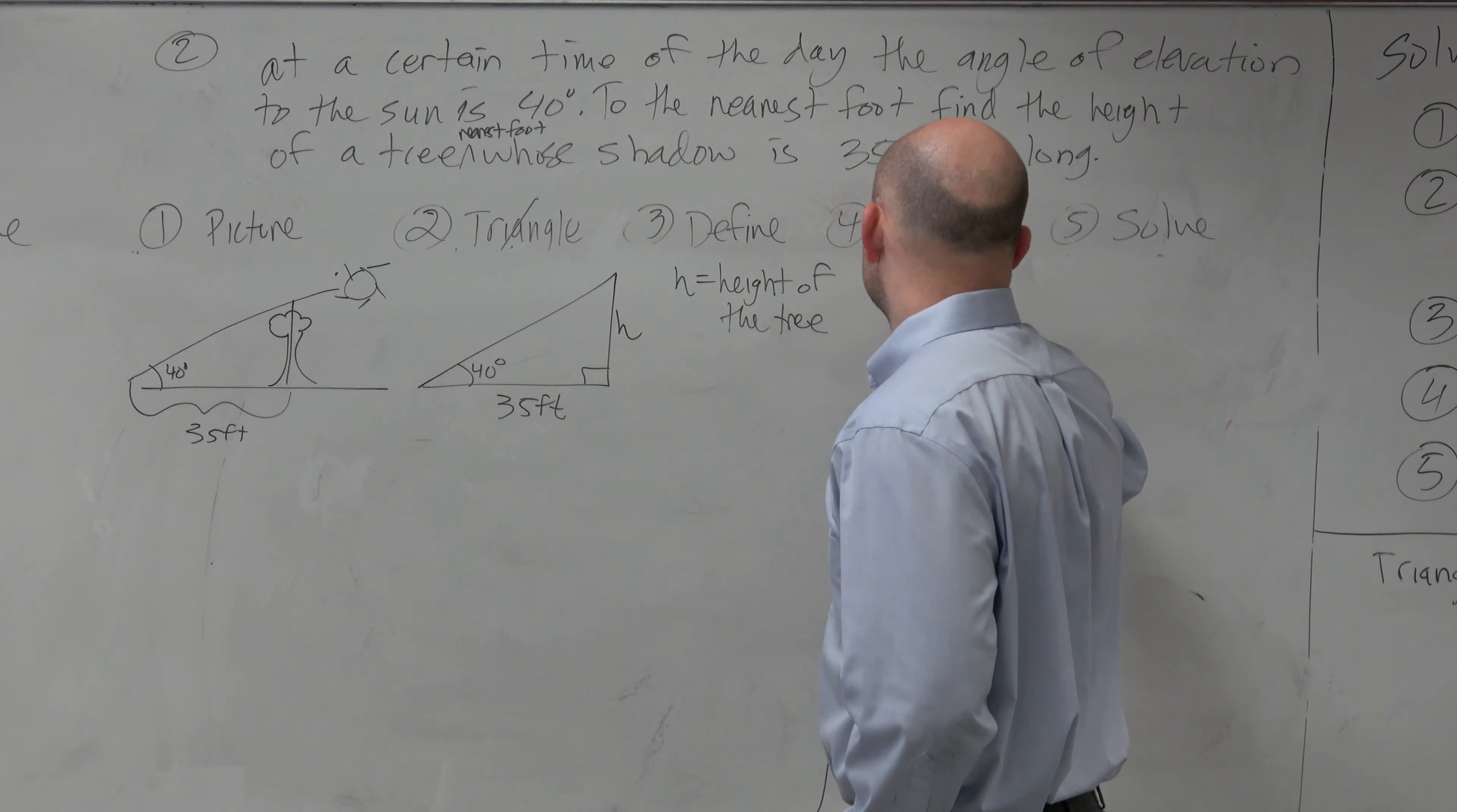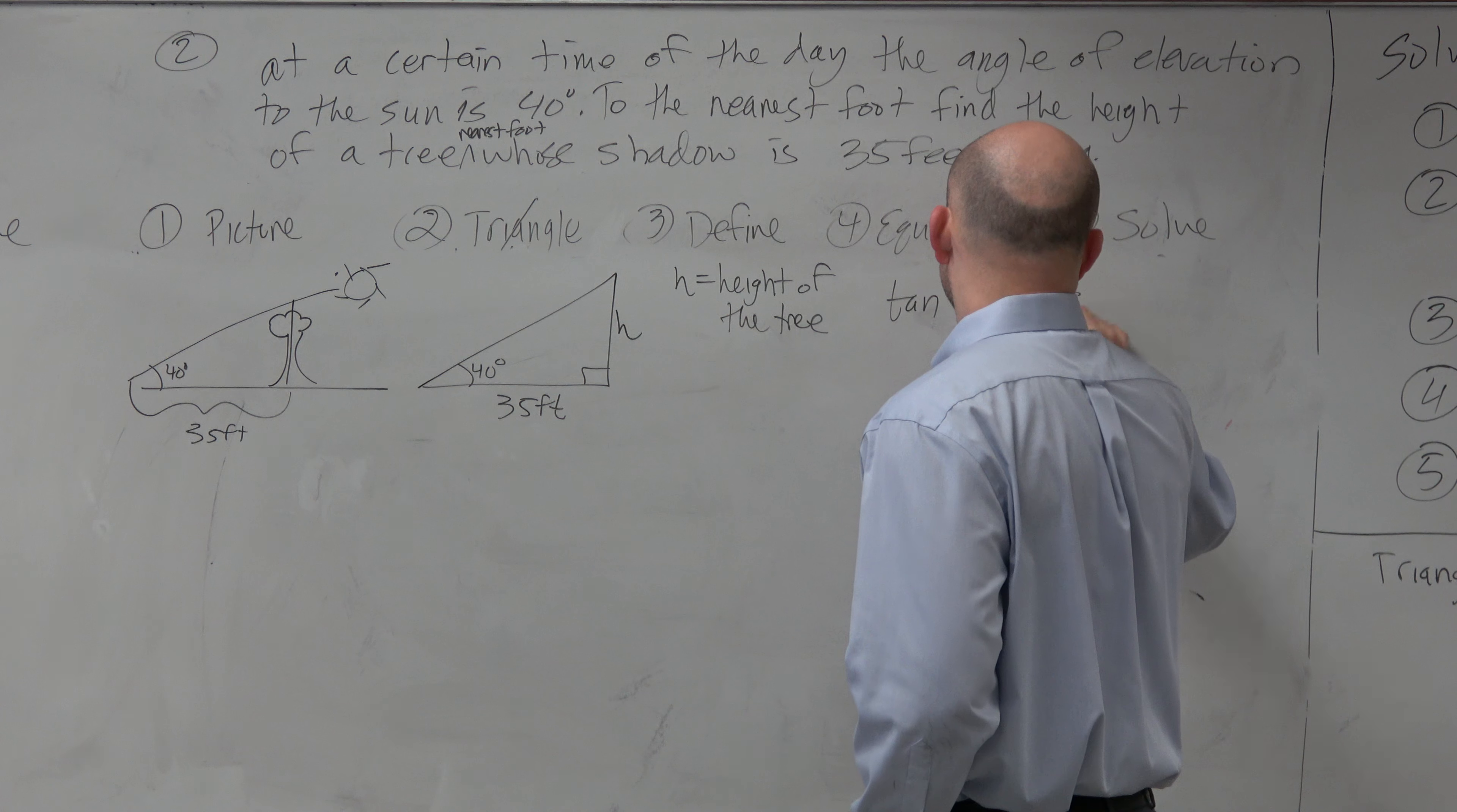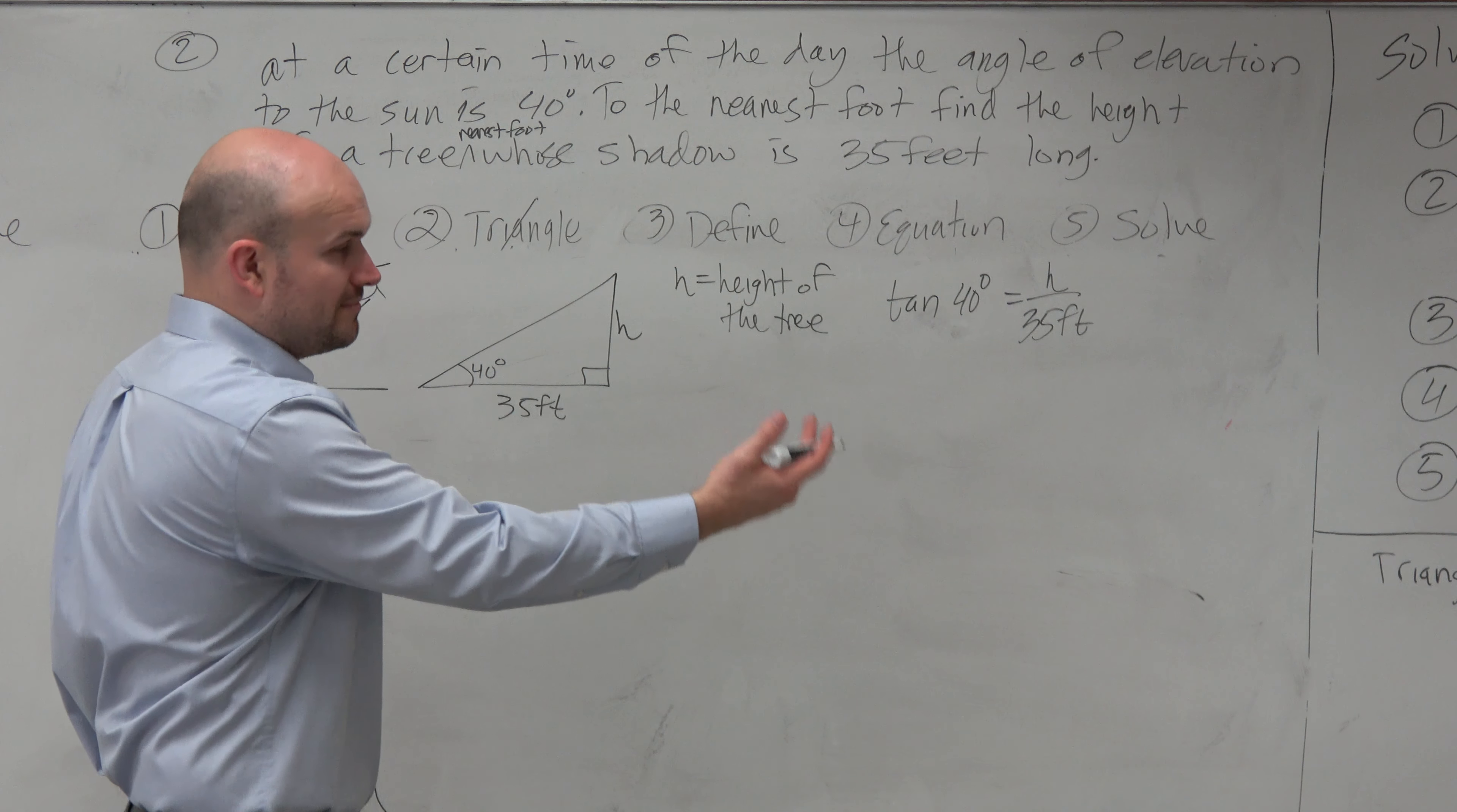So I can just say the tangent of 40 degrees equals opposite over adjacent. And then I could go from the answer from here.